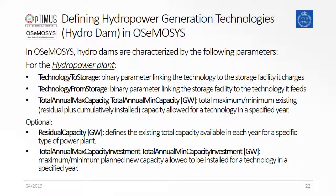We need to define the parameter technology to storage and technology from storage. The former needs to be set to one for the technology that is charging a specific storage unit, and the latter for the technology that is discharging the storage. Since the options to install hydro power dams are usually rather limited, it is also important to define the total annual max capacity according to the potential. Optionally, it is also possible to consider existing power plants by defining the parameter residual capacity. The parameters total annual max capacity investment and total annual min capacity investment can be used to indicate the minimum or maximum amount of capacity that can be installed within one year.